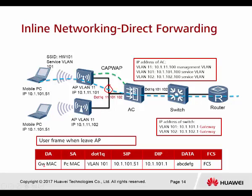From the packet capture, you can see the destination address is the gateway, 10.1.1.1. My PC's IP address belongs to VLAN 101, and it wants to go to the gateway at 10.1.1.1. The packet is pointing directly to the gateway on the switch.